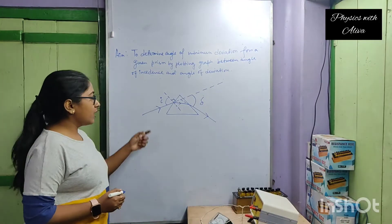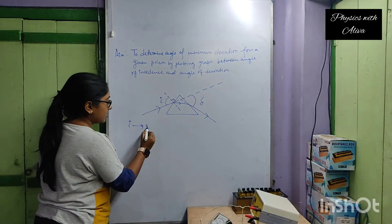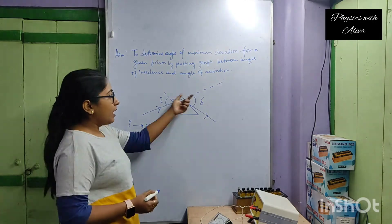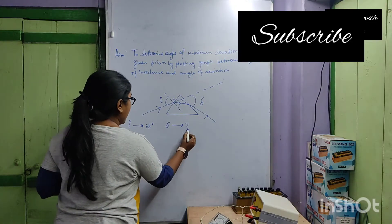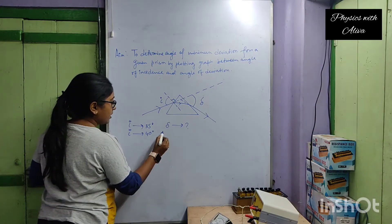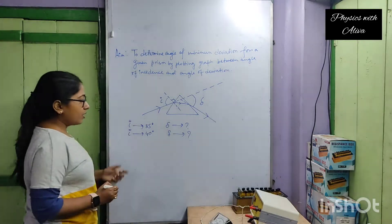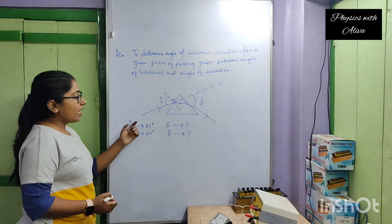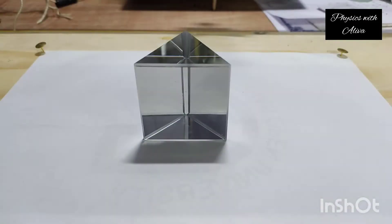In our practical, at first we will take the incident angle I as 35 degrees and then we will find out the angle of deviation for this case. Then we will take the incident angle as 40 degrees and find the angle of deviation. Like this, we will change the incident angle by 5 degrees and find the angle of deviation each time.